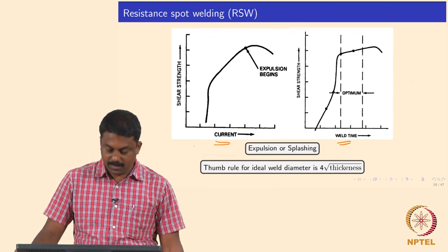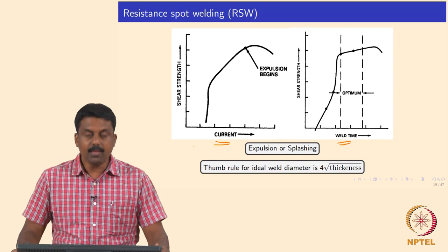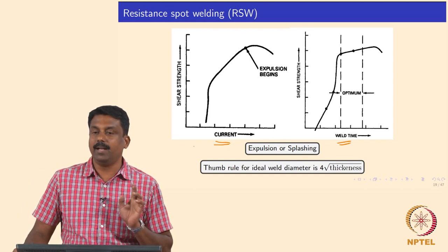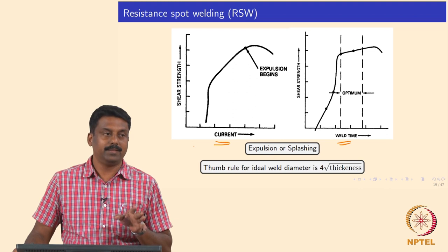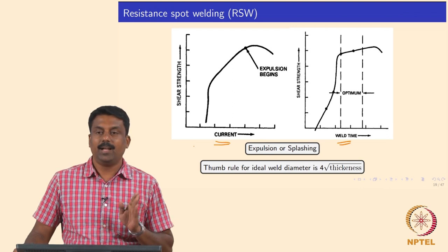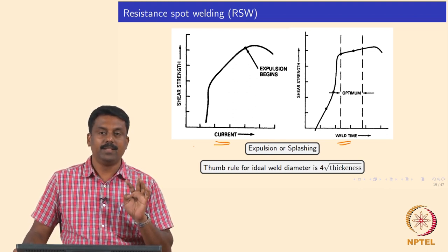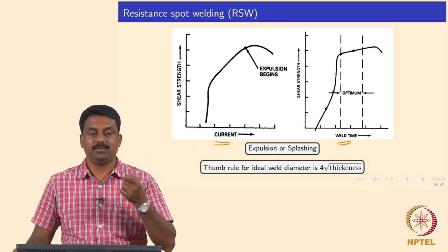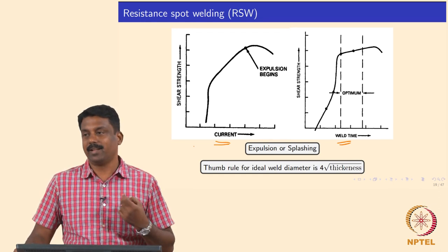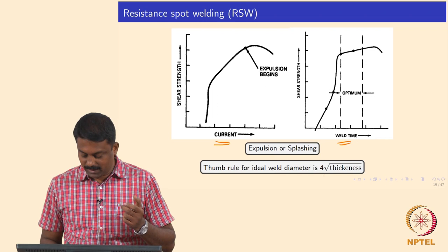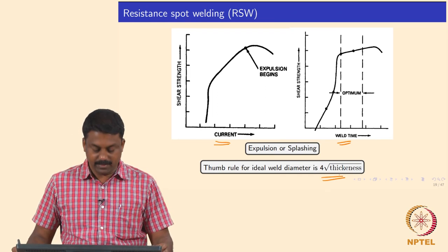The thumb rule for ideal weld nugget diameter is 4 times the square root of thickness, and this is also governed by the automotive industry — sometimes it will be 4.2 times thickness. The ideal diameter is 4 times the square root of thickness.